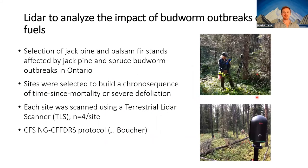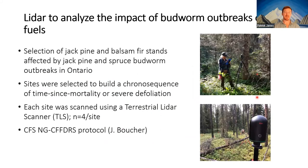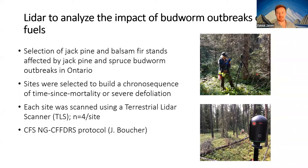To measure fuel abundance and connectivity we're using terrestrial lidar (TLS) — a device that allows us to create a 3D model of a forest stand from which we can extract metrics summarizing the abundance and connectivity of fuels.